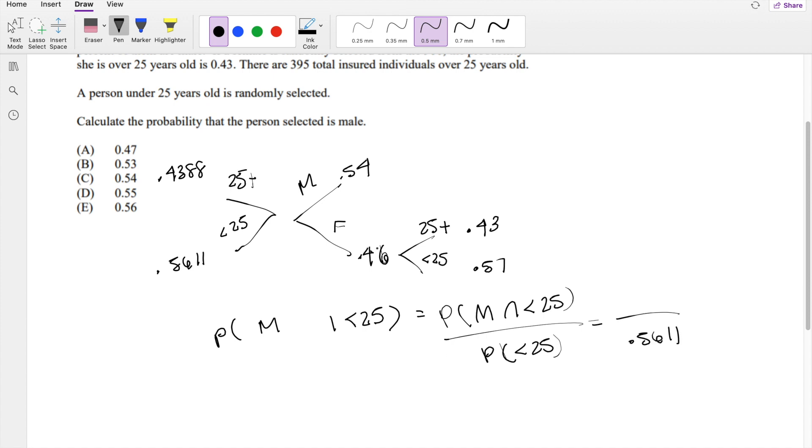And we know that female and less than 25 makes up 0.5611 times 0.57, which is 0.2622 of the whole population.